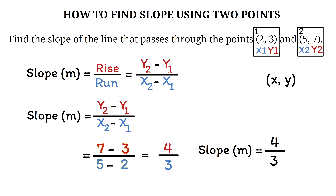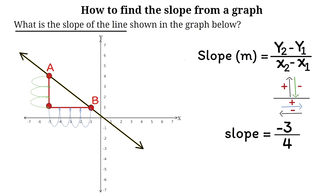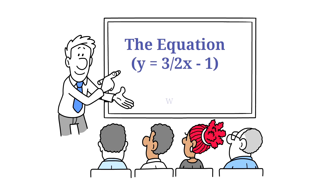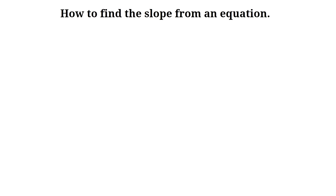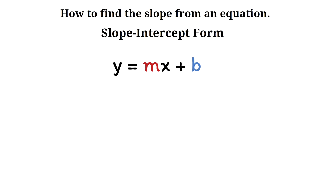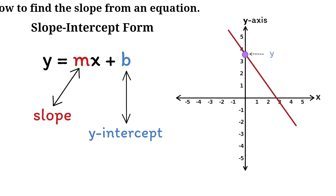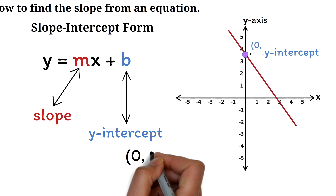So far, we've learned how to find the slope from two points and from a graph. But what if we have an equation? One of the most common ways you will see slope in an equation is through the slope-intercept form, written as y equals mx plus b, where m is the slope and b is the y-intercept — the point where the line crosses the y-axis. At the y-intercept, the x-coordinate is always zero and the y-coordinate is b.